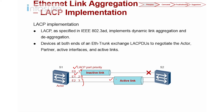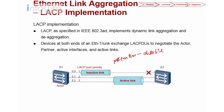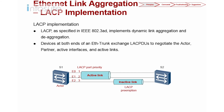What happens when the failed link E0 recovers? Will the active links return to E0 and E1? The answer depends on preemption. By default, preemption is disabled. If you enable preemption, then once E0 comes back online, it will become an active link again. This is how LACP maintains active links and backup links.